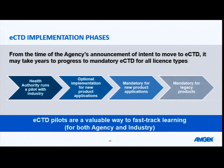Following the mandatory eCTD for new product applications, traditionally the next step is mandatory for legacy products. This may take some time. Often the agency will re-consult, propose its timelines around that transition, and give industry an opportunity to say whether they can meet those timelines. The Australian agency is just doing that step at the moment. They are proposing that all new applications have to be eCTD by January 1st next year, and then by 2020 we will be moving fully to mandatory eCTD. It's about the same timing as other regions — some companies will probably feel that it's too quick, others will be happy to make that transition.